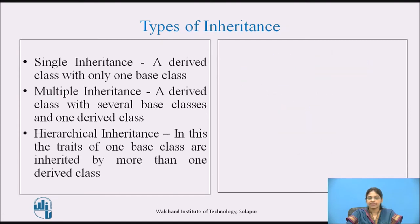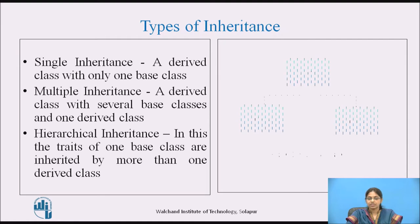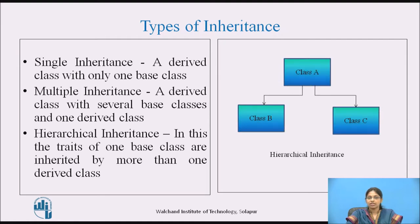The next is hierarchical inheritance. In this type, the traits of one base class are inherited by more than one derived class. Here there is a single base class from which more than one derived class has been derived. This is hierarchical inheritance.